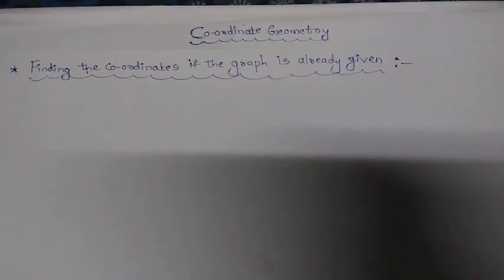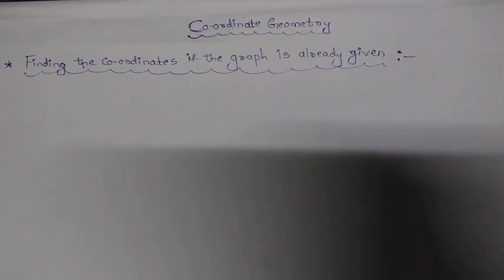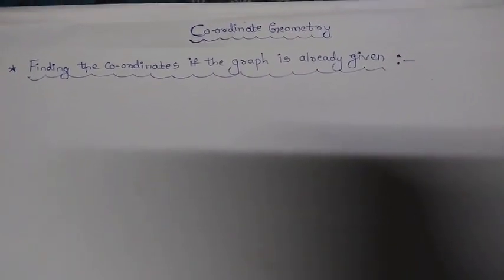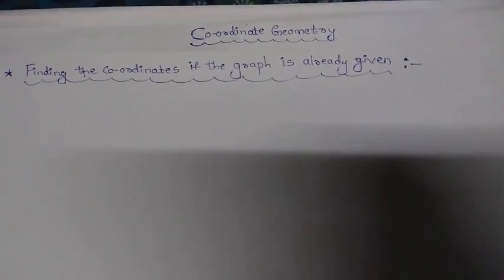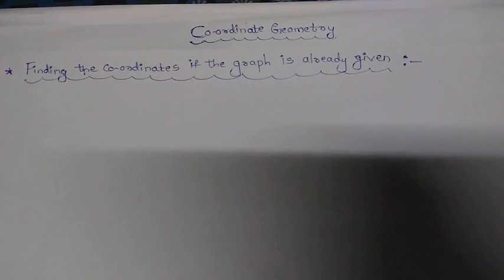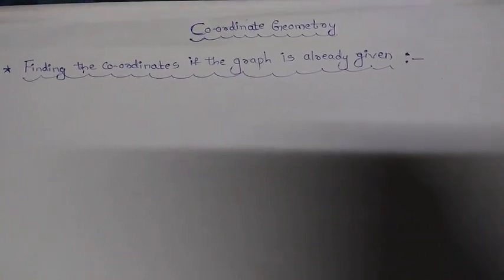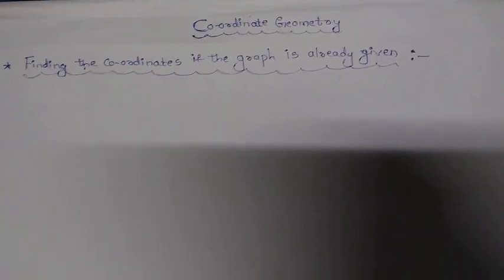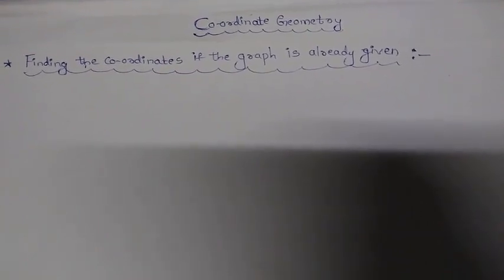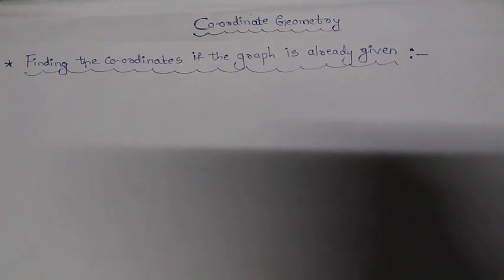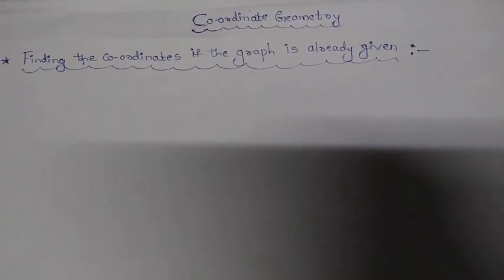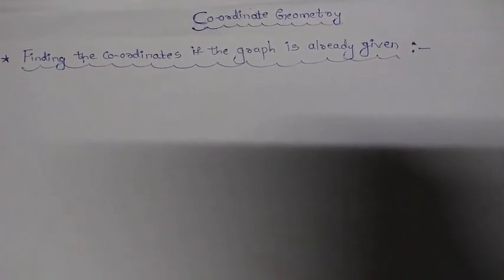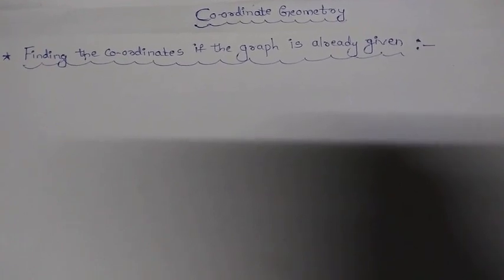Good morning everyone. In the last class we studied about how to draw the graph if the coordinates are already given. In today's class we will be doing the opposite of that — we will be finding the coordinates if the graph of a particular point is already given.